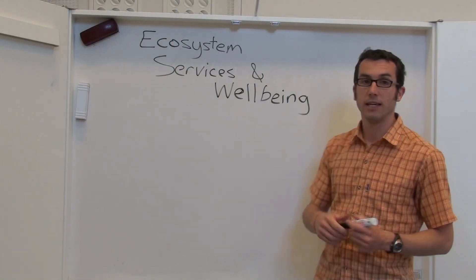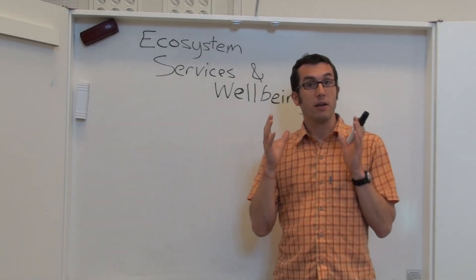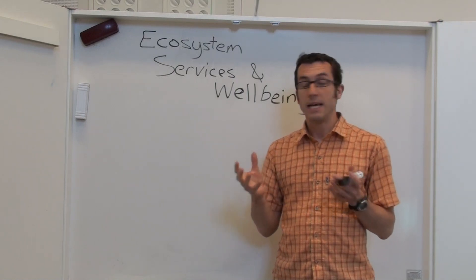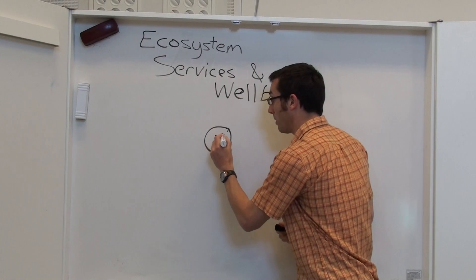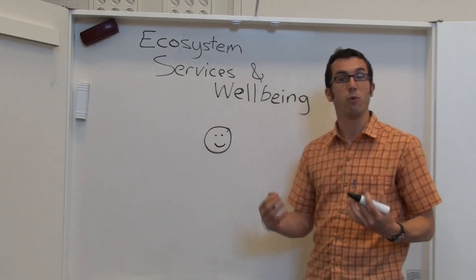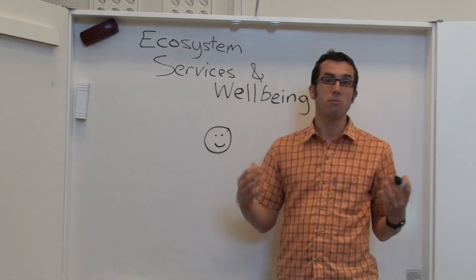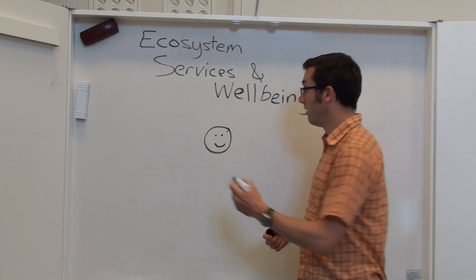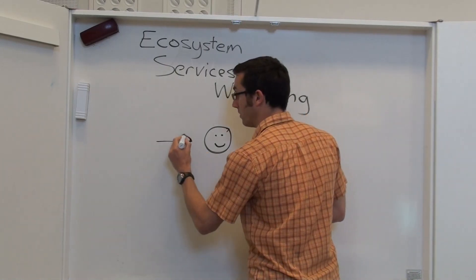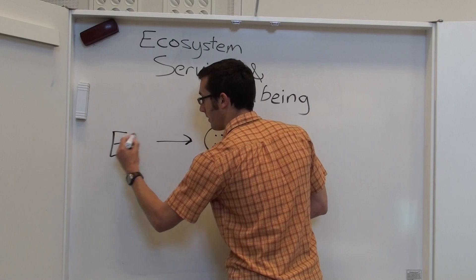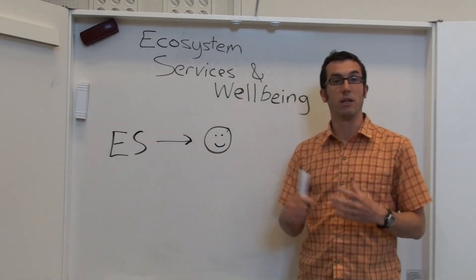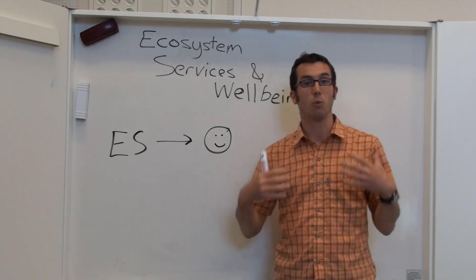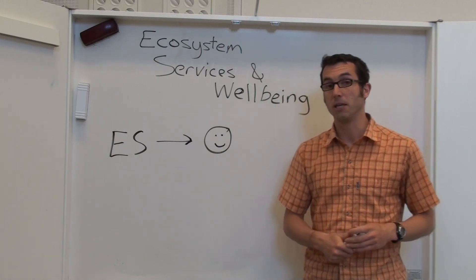Now the interesting insight from the concept of ecosystem services is that our well-being, you could consider it almost our happiness, how good a life we have, is actually at some level derived from ecosystems and the services they provide. So ecosystem services are really important ultimately for human well-being and this was the insight which was very strongly made in the Millennium Ecosystem Assessment.